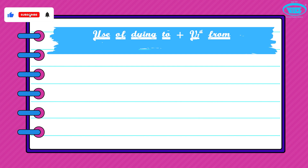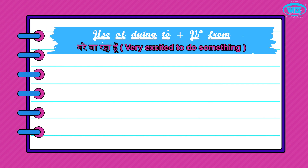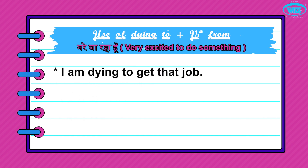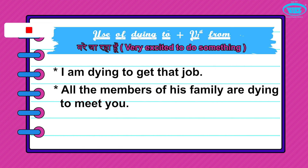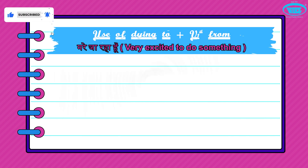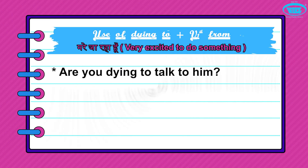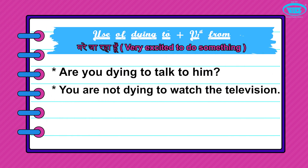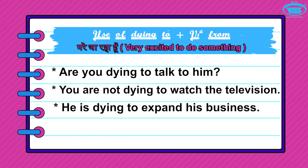The next pattern is 'dying to' + first form of verb, which means very excited to do something. For example: I'm dying to get that job. All the members of the family are dying to meet you. She was dying to meet me. Are you dying to talk to him? You are not dying to watch the television. He's dying to expand his business.